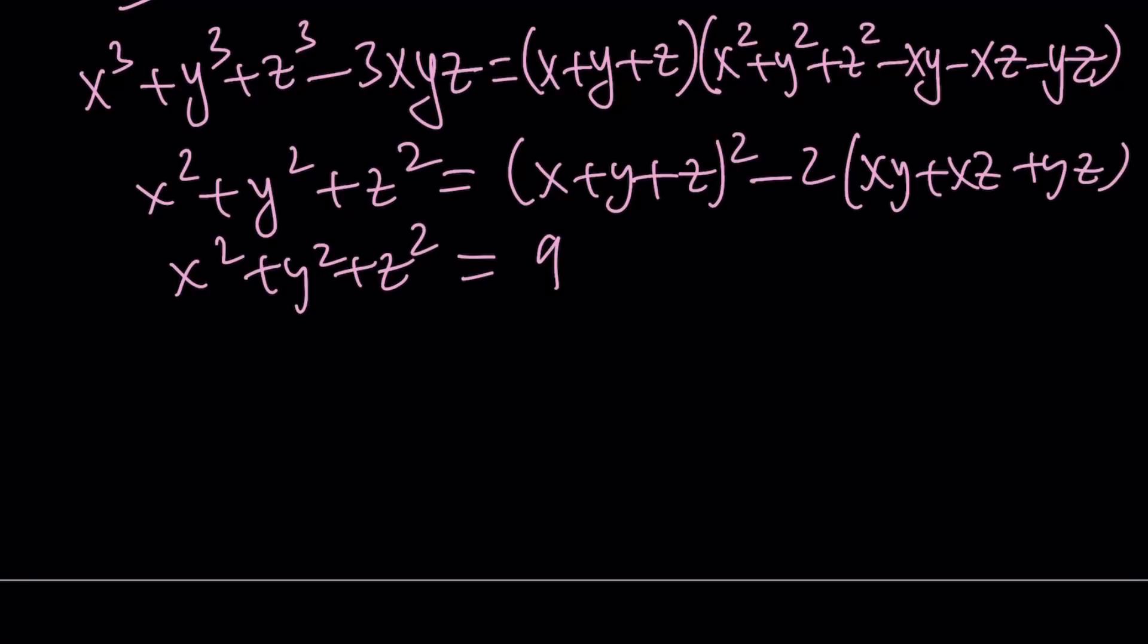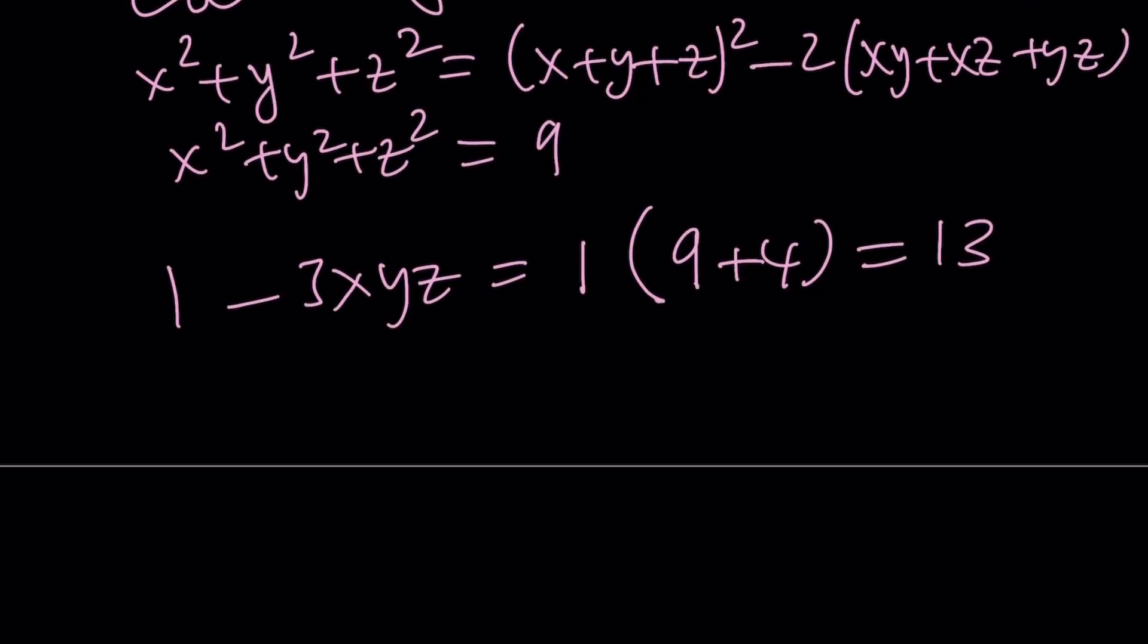So now I have these two values. And how am I going to use this? Well, I'm just going to plug in everything. So I know that this is equal to 1 minus 3 x, y, z. And then x plus y plus z is 1. x squared plus y squared plus z squared is equal to 9. And from that, I'm going to subtract negative 4, which is positive 4 in this case. That is going to be 13. And from here, x, y, z is going to be negative 4 as before.